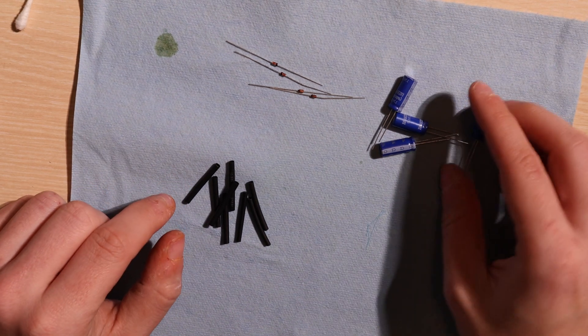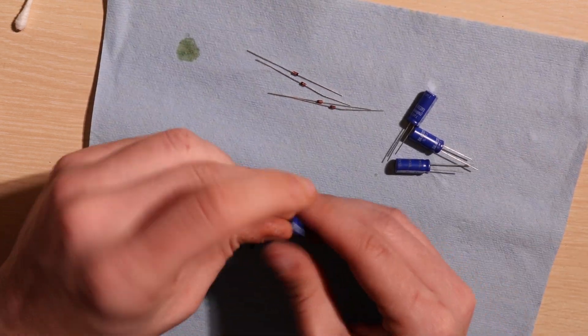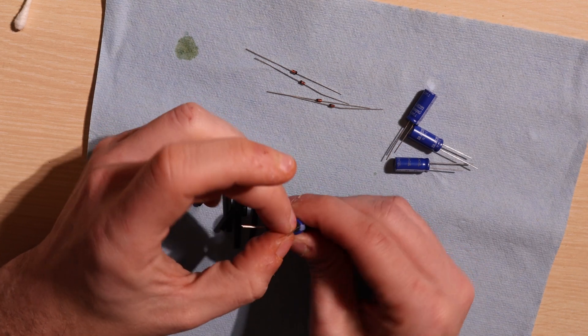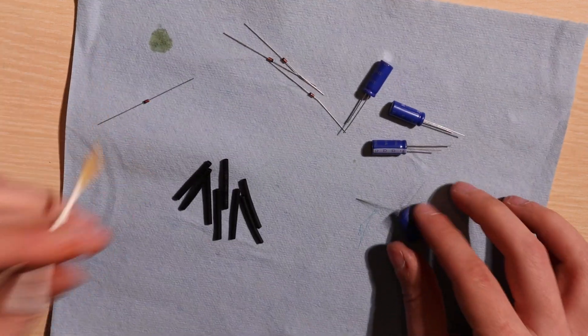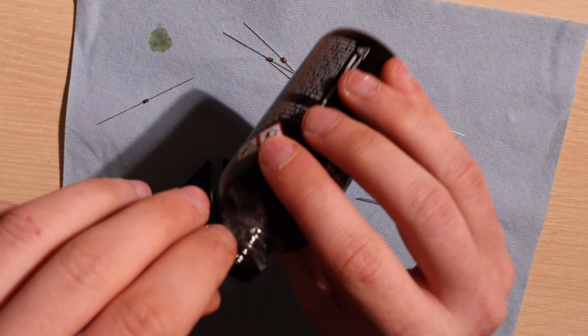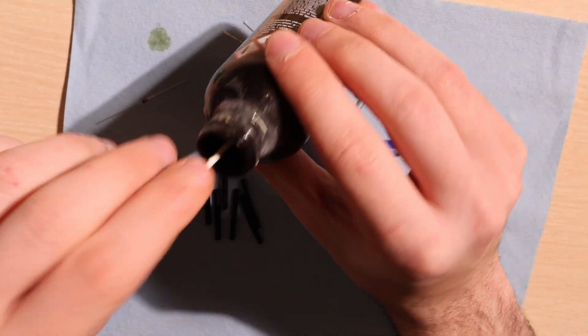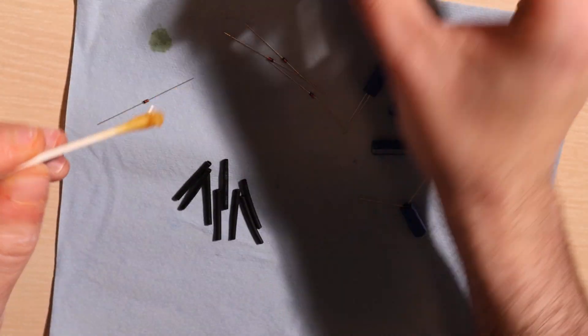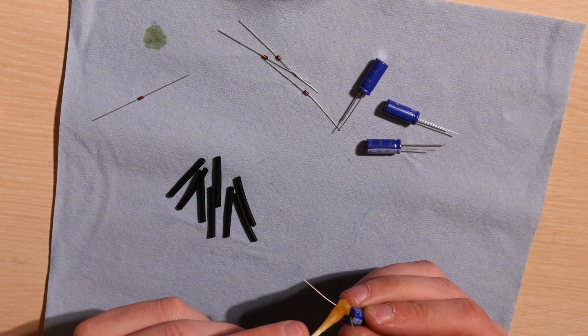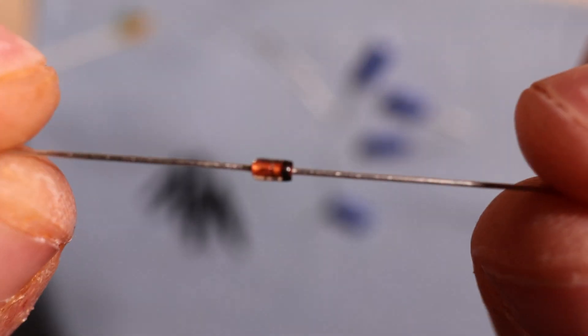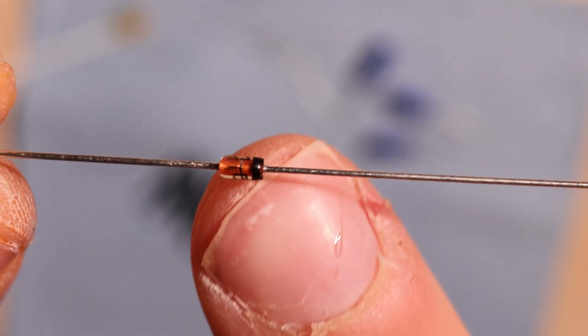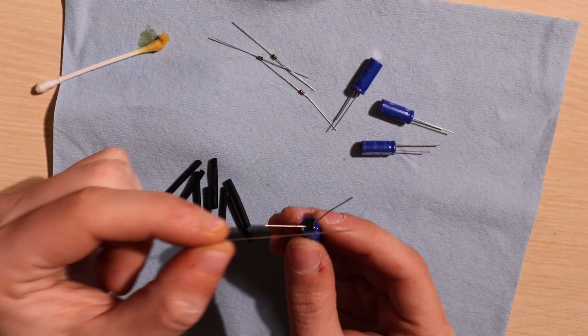To get started, each capacitor has a long pin and a short pin. The long pin is the positive of the capacitor, the short pin is the negative of the capacitor. What we're going to want to do is take some flux and add it to the pins of the capacitor and then take one of our diodes and have the black band of the diode face towards the positive of the capacitor and the other side face towards the negative.